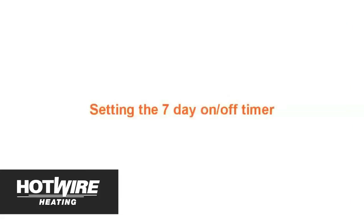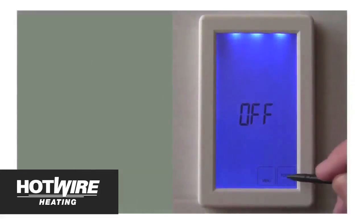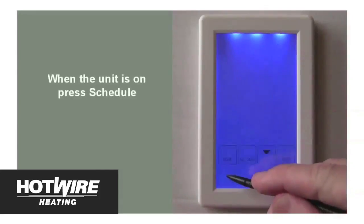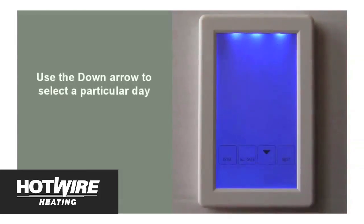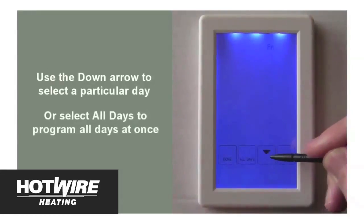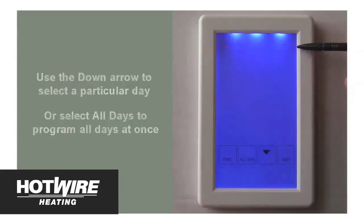Setting the 7 day on/off timer. This will allow us to use either 7 day mode, where we enter one day's times and those times will be applied across the whole week, or we can set each day's on and off times individually. To begin, turn on the unit by pressing power, then press schedule. Your current day of the week will start flashing on the top of the screen. At this point, you can either use the down arrow to choose the day of the week that you wish to program, or you can simply use 7 day mode by pressing the all days button. In this case we will use 7 day mode first by pressing the all days button. You will see all of the days of the week flashing on the top of the display. Then press next.